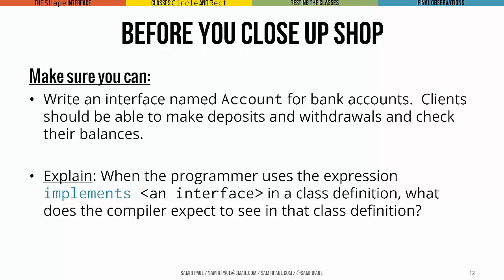And just make sure you know, if a programmer uses the statement implements and then an interface name, for instance implements Shape or implements Pen in a class definition, what does the compiler then expect? What must exist in the class that we define? That's it for now. Thanks.